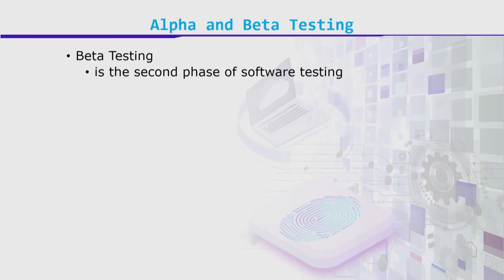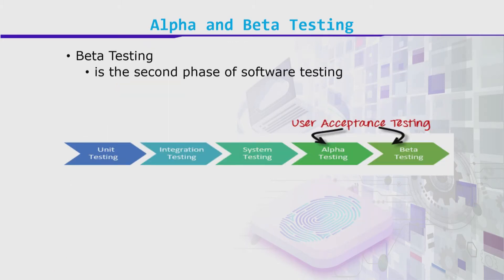Beta testing, on the other hand, is the second phase of software testing. Both alpha and beta testing are types of acceptance testing. We have unit testing, integration testing, system testing, and then acceptance testing — which includes alpha and beta.